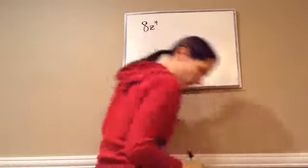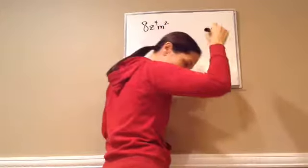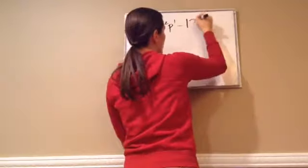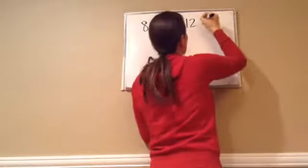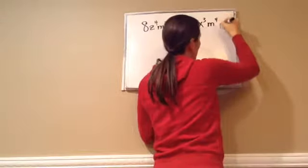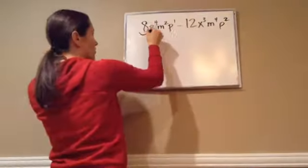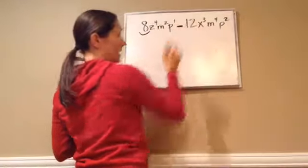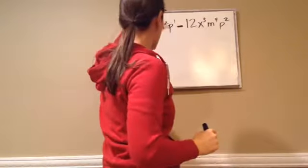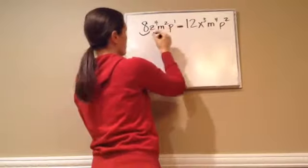8z to the fourth power m squared p, and you can put 1 if you want to, minus 12x to the third power m to the fourth power p to the second power. You're going to start with your numbers. And you're actually not even going to minus, even though it says to minus it. You're actually just extending both of them and finding what's common.